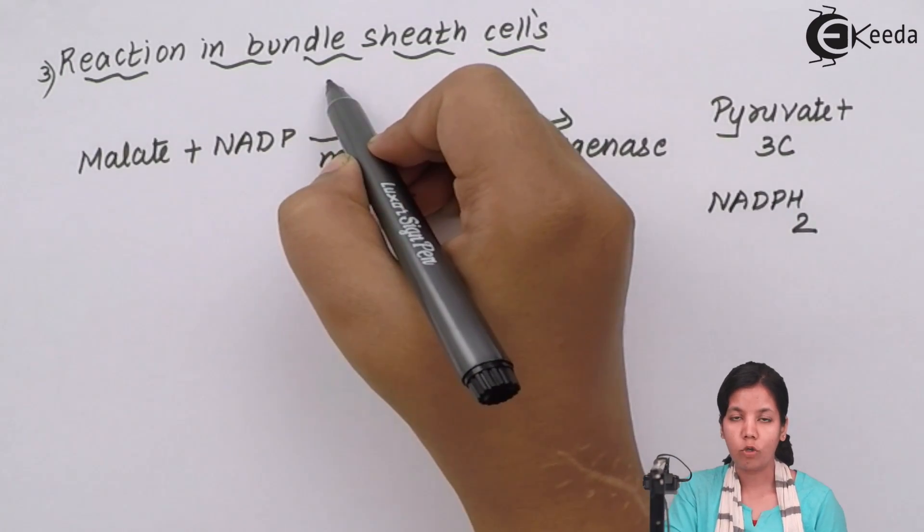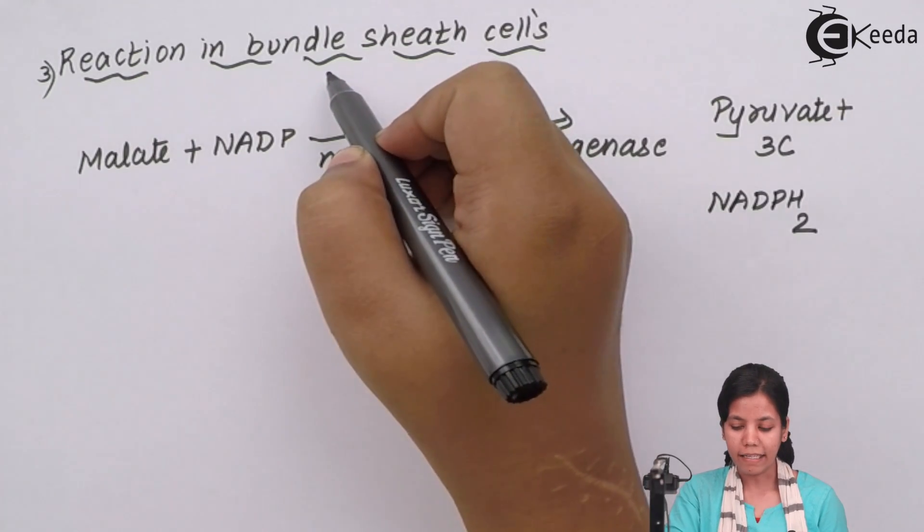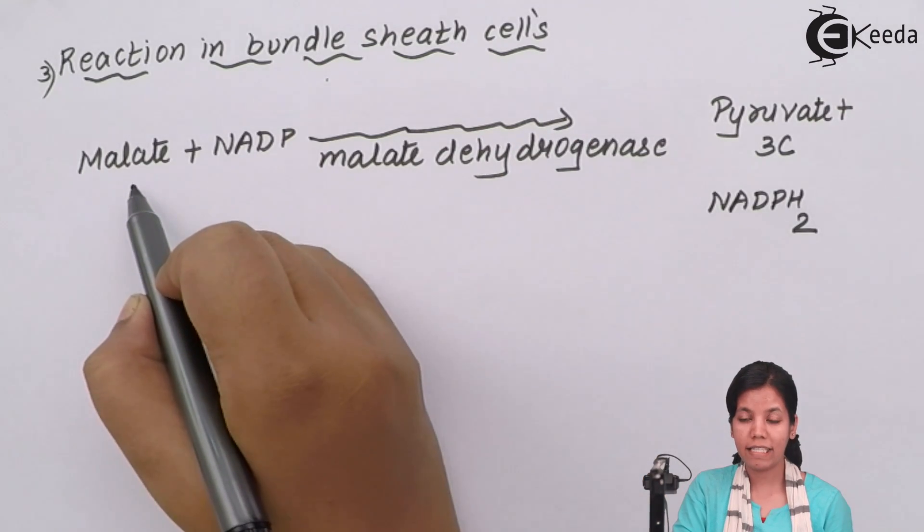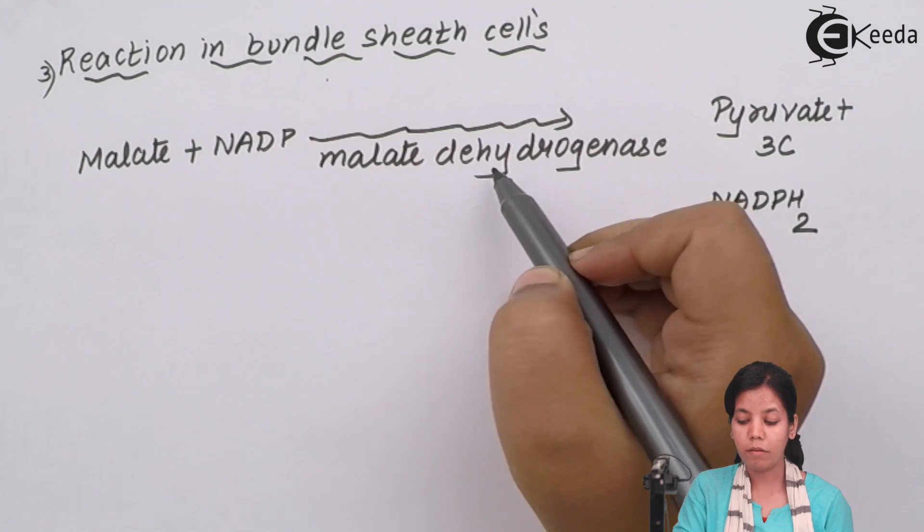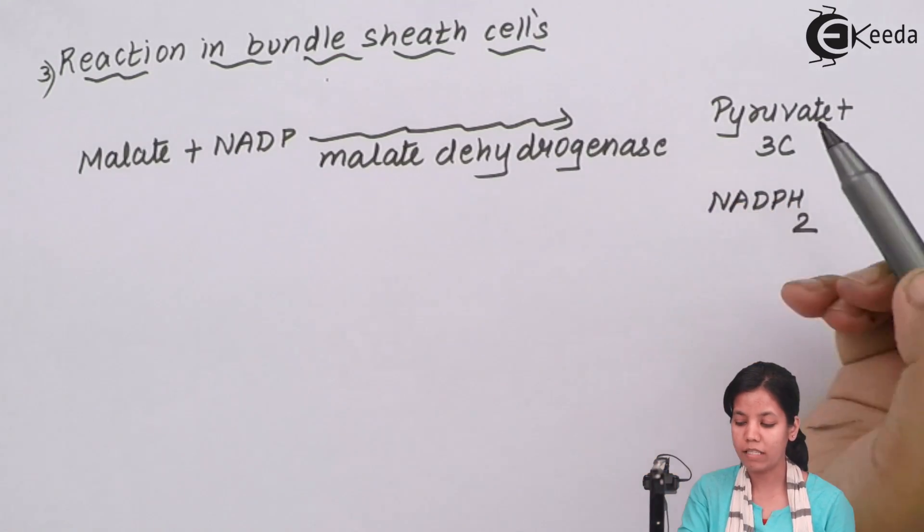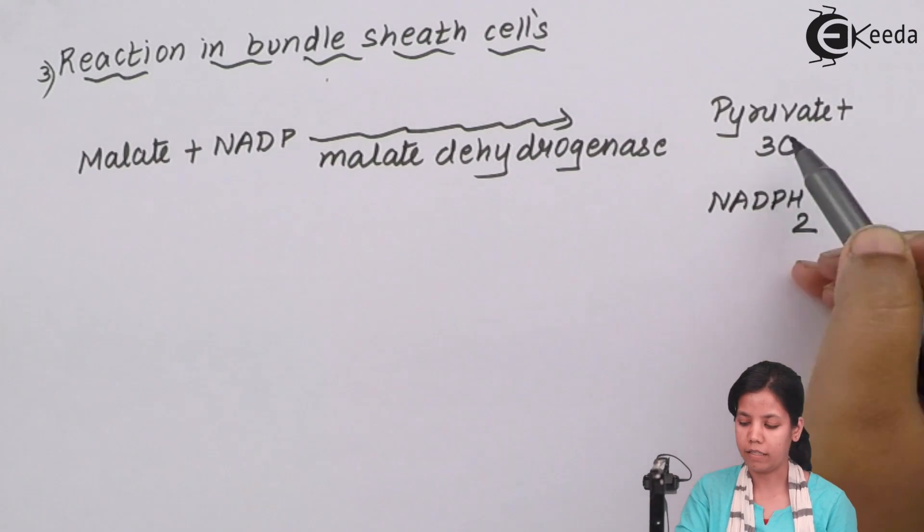The last reaction of C4 pathway or C4 cycle or C4 plants is reaction in bundle sheath cells. During this reaction, four carbon malate stable compound reacts with malate dehydrogenase which removes the hydrogen molecules and forms pyruvate, a stable three carbon compound, and this pyruvate further goes to different cycles.